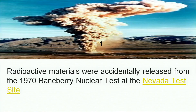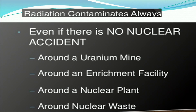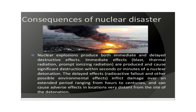We are familiar with the Hiroshima and Nagasaki episodes during the Second World War. Radiation contaminates areas around a uranium mine, an enrichment facility, a nuclear plant, and nuclear waste deposition sites. Consequences of nuclear disaster: a nuclear explosion produces both immediate and delayed destructive effects. It inflicts damage over an extended period ranging from hours to centuries and can cause adverse effects in locations very distant from the site of detonation.